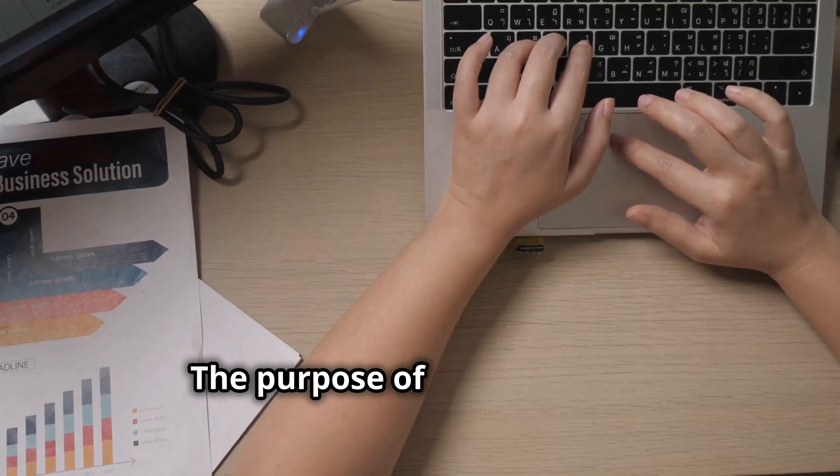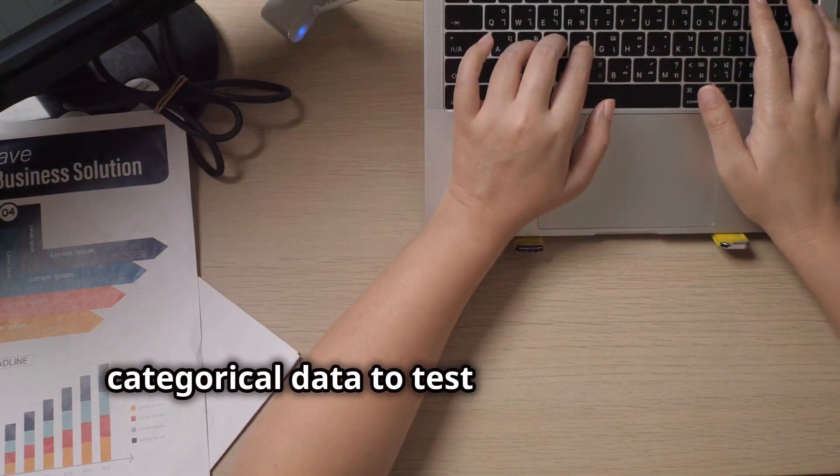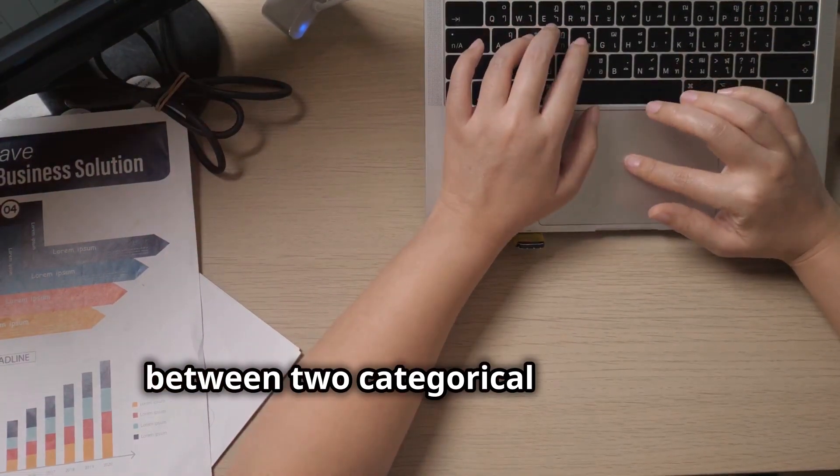Chi-square test. The purpose of this test is for categorical data to test the relationship between two categorical variables.